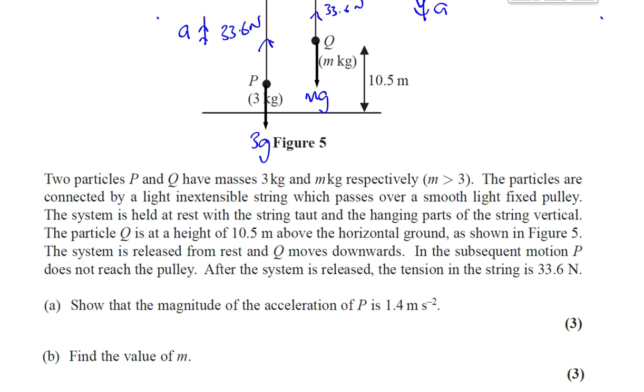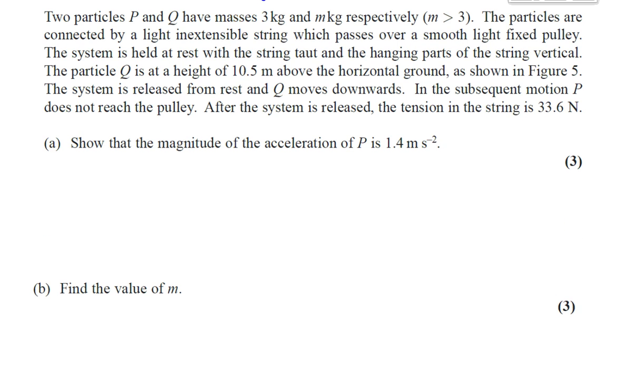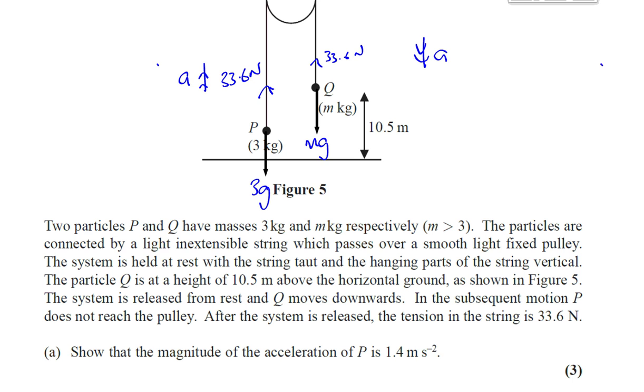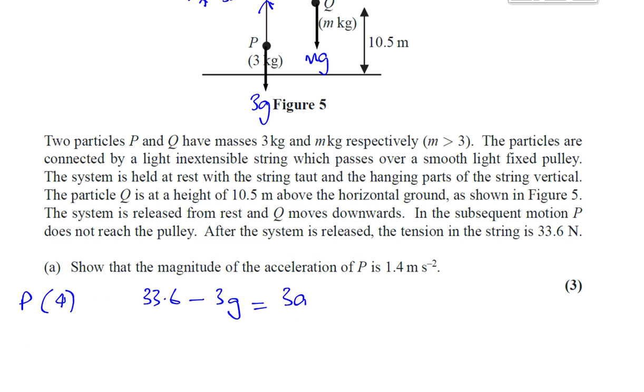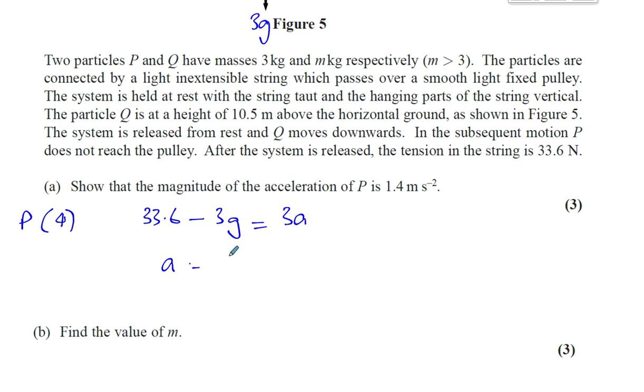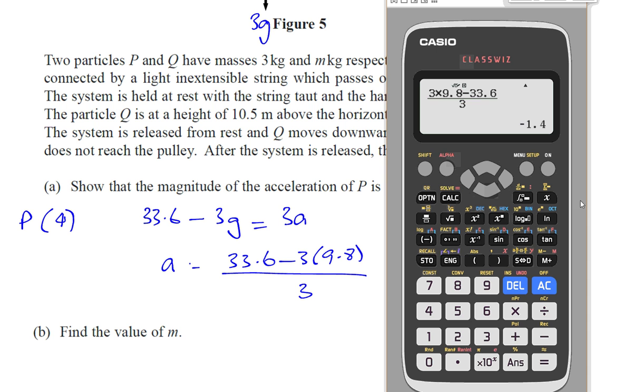Now we can set up part (a): show that the magnitude of the acceleration of P is 1.4 meters per second squared. So for P, P is going to be moving upwards, so we can say 33.6 minus 3g equals ma, which is 3 times a. That should give us the answer if we find what a is. a is going to be 33.6 minus 3 times g, which is 9.8, over 3.